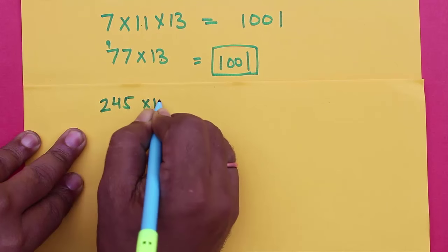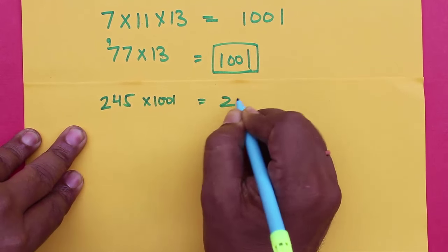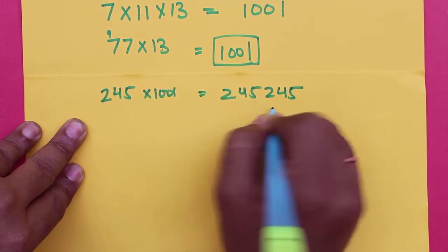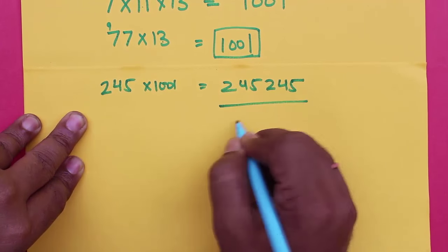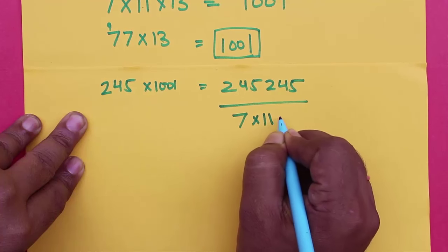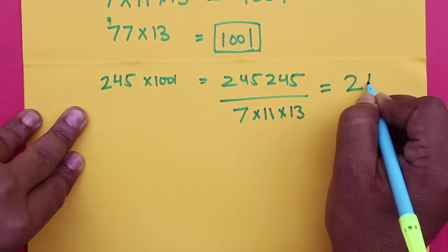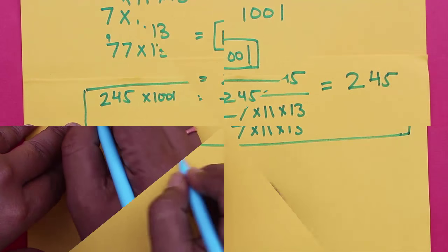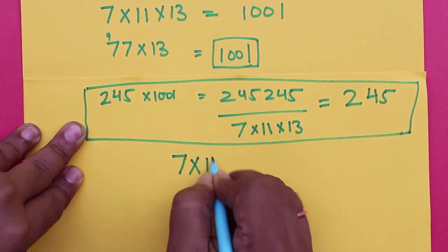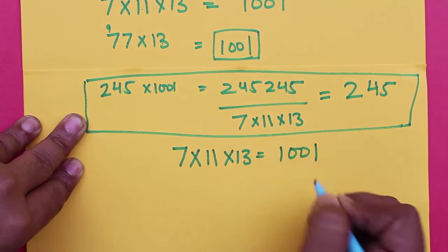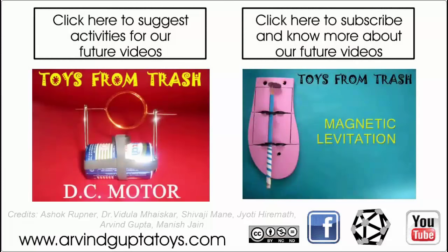For instance, 245 when multiplied by 1001 will give you 245245, and if you divide 245245 by 7 into 11 into 13, you will get 245 back again. So 7 into 11 into 13 is equal to 1001. Hope you enjoyed this trick!